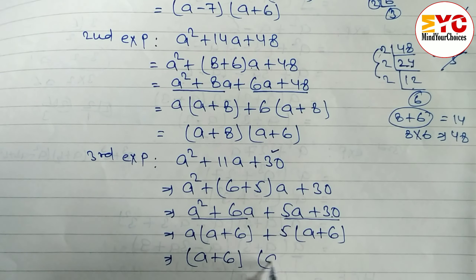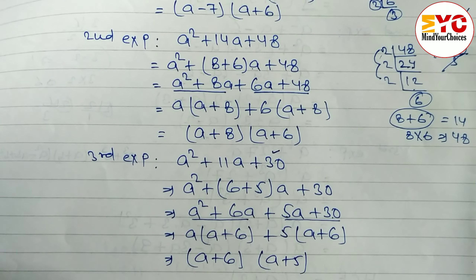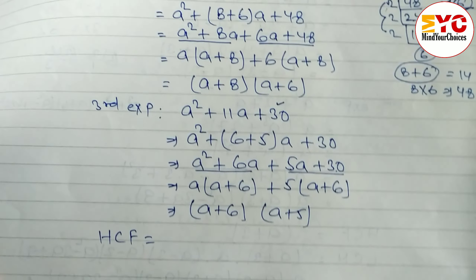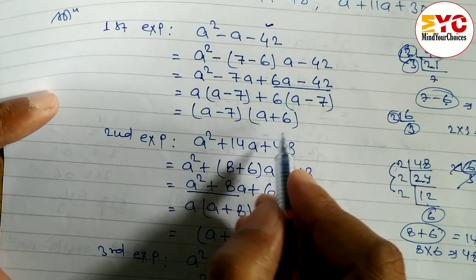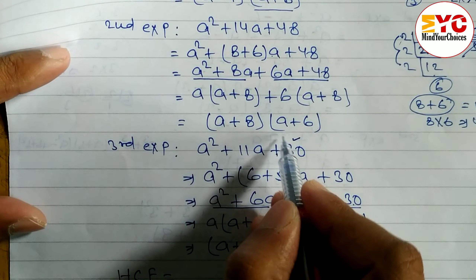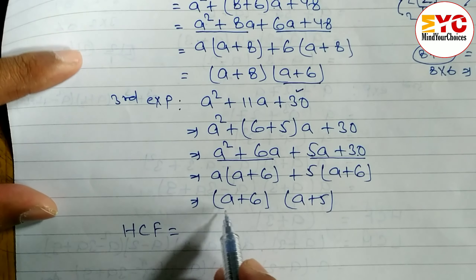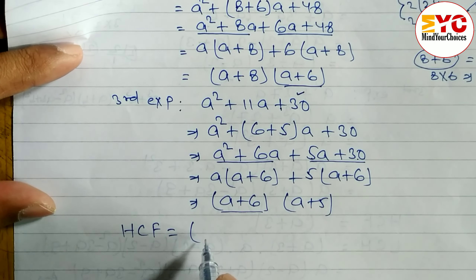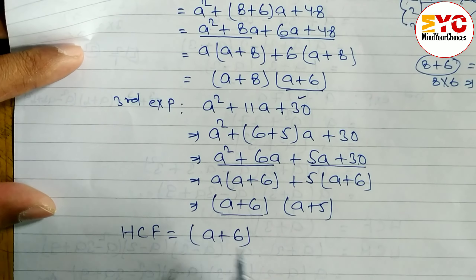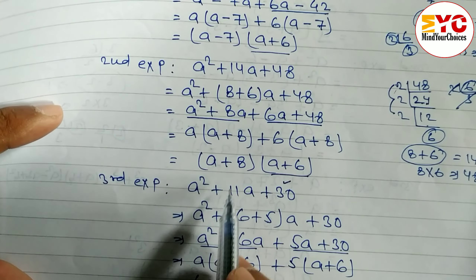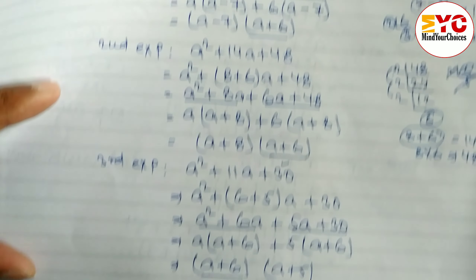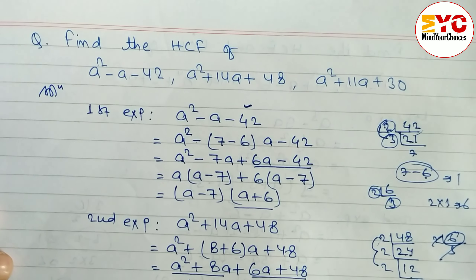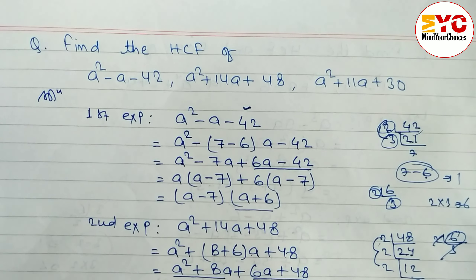Now we find the SCF by identifying the common elements across all three factorizations. The first expression has (a plus 6), the second also has (a plus 6), and the third also has (a plus 6). The factor (a plus 5) is not common to all. Therefore, the SCF is (a plus 6).